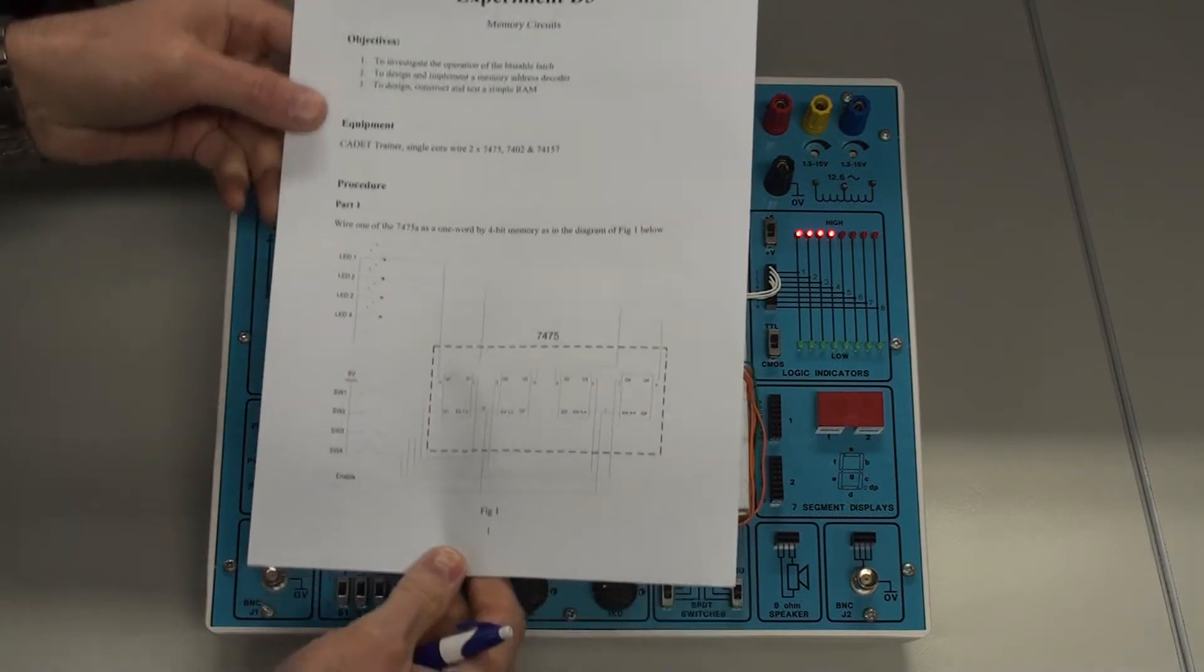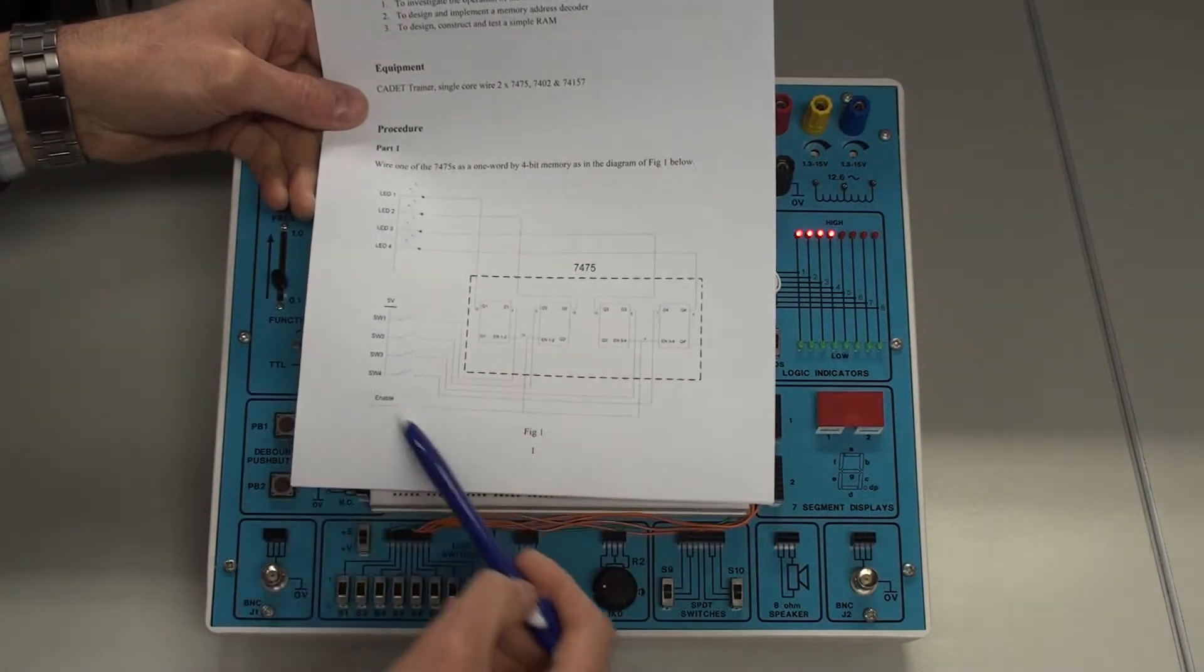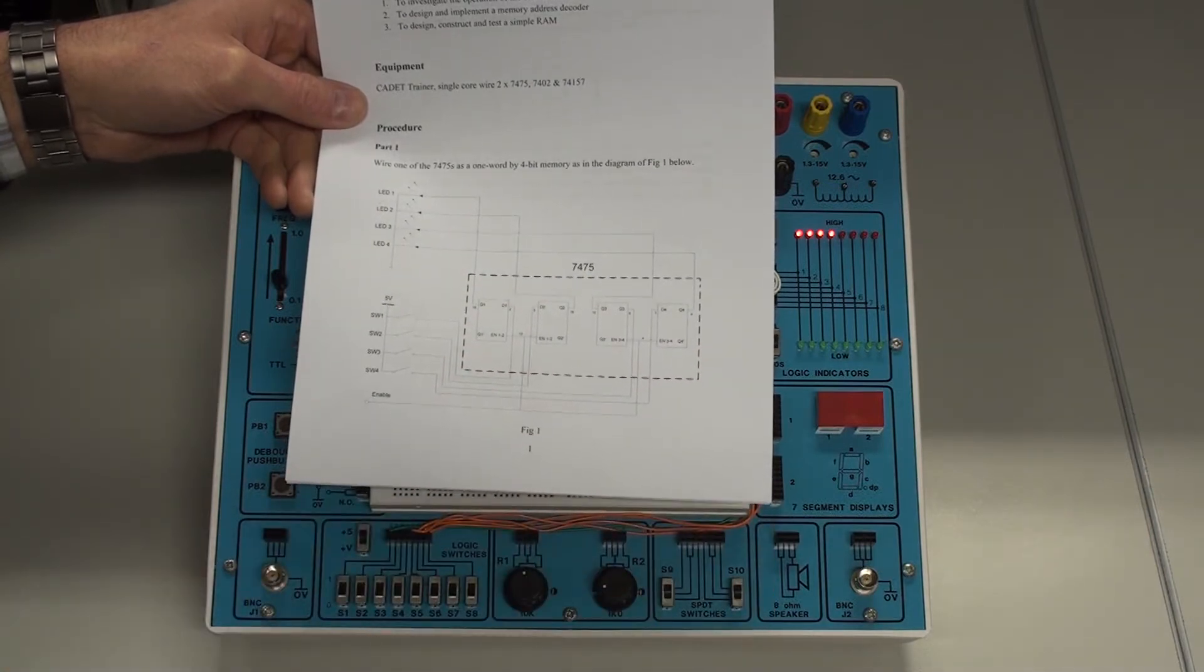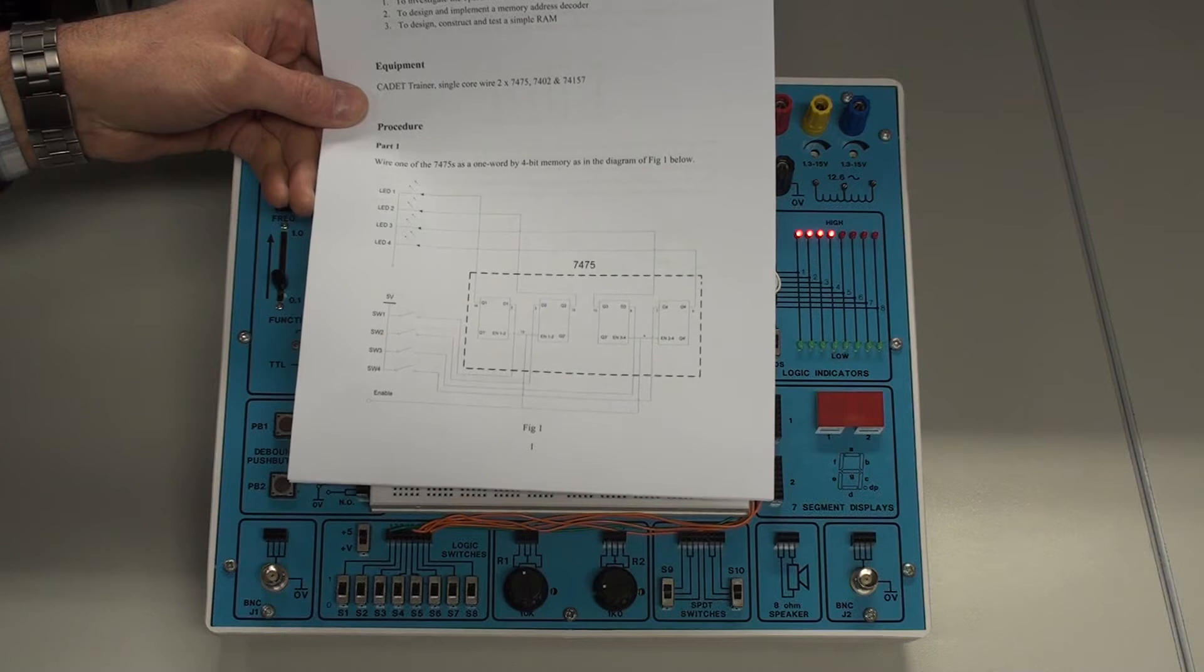What you need to do is to build up this circuit here, which is the 7475 D-type latch. It's a 4-bit latch.